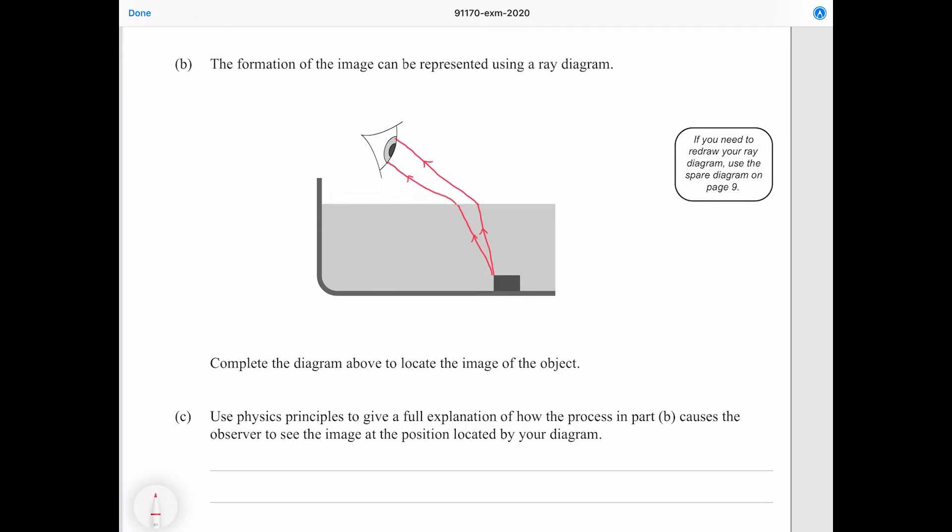As they reach this interface they are going to refract into the eye. We know that they're going to bend in this particular way because when we're going from a slow material to a quick material, the rays are going to bend away from the normal. Now to find the location of the image we need to back trace these rays, and so there's our image.